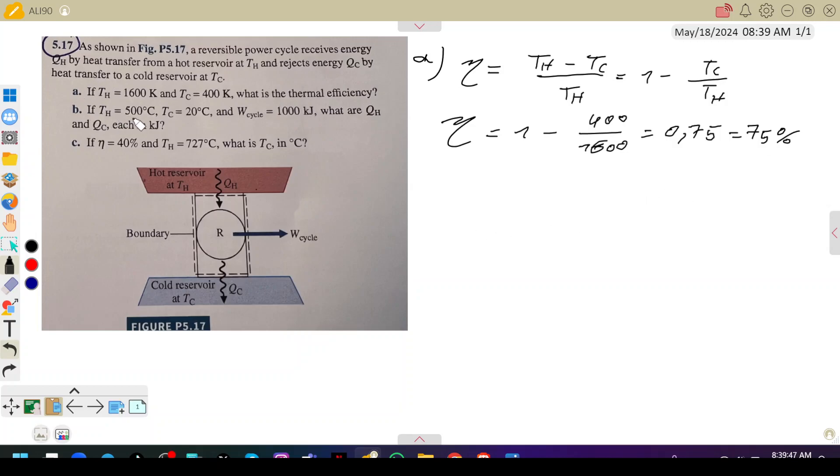For part (b), if Th is 500°C, Tc is 20°C, and the work W is 1000 kilojoules, what are Qh and Qc each in kilojoules? We calculate the efficiency again. Because it's reversible, τ is 1 minus Tc divided by Th. But we need to pay attention—the temperatures are given in degrees Celsius and we need to convert them to Kelvin.